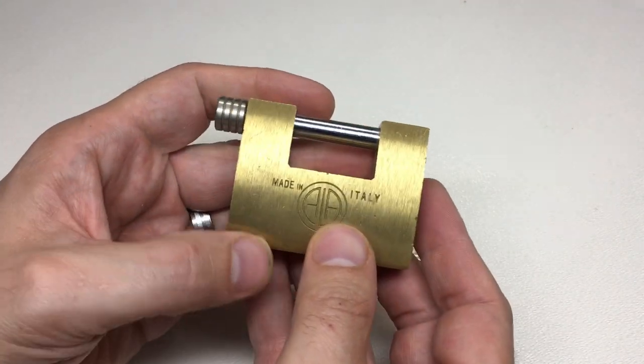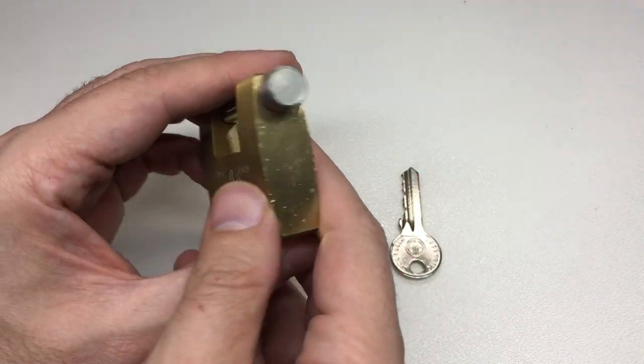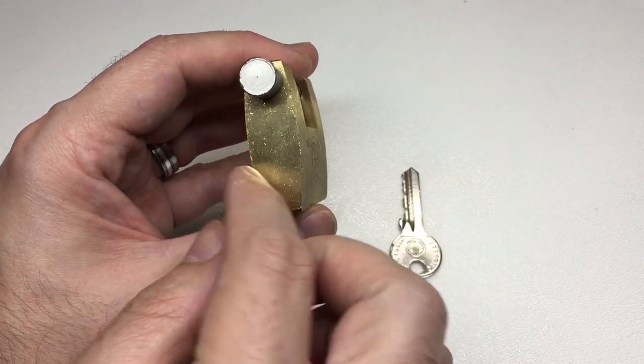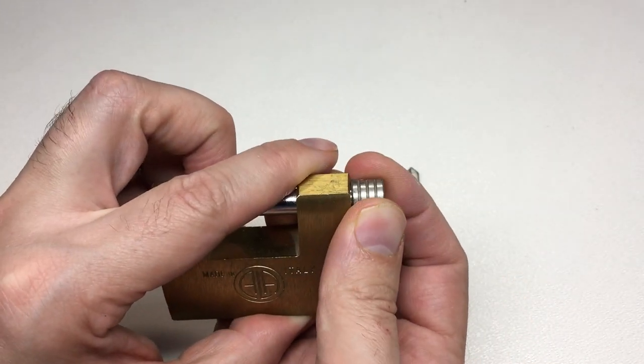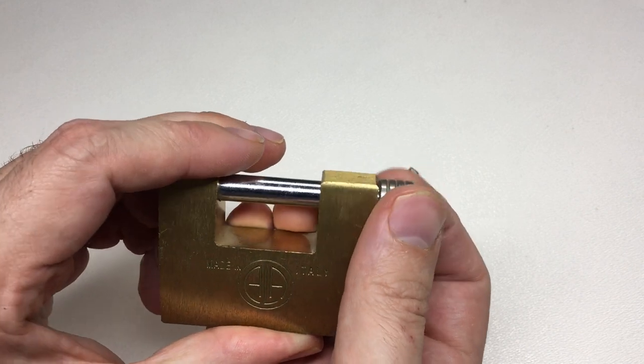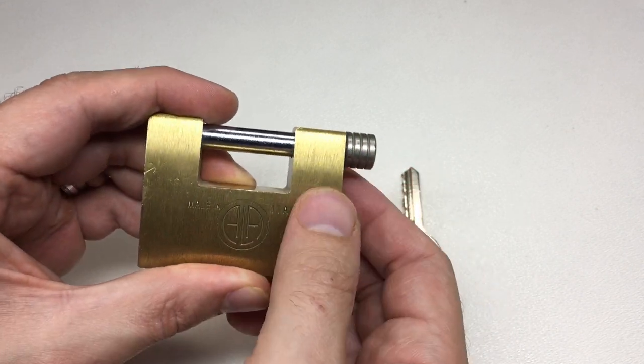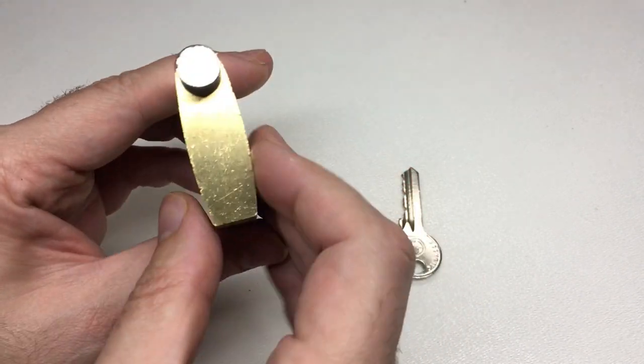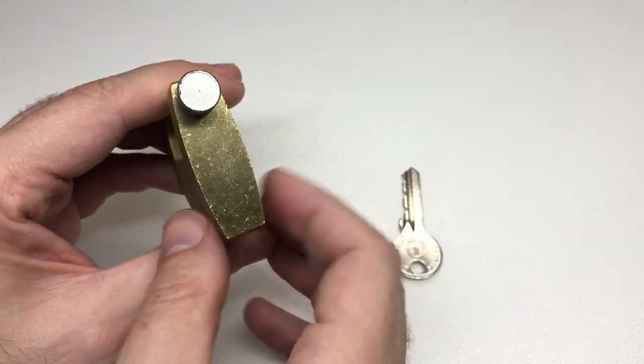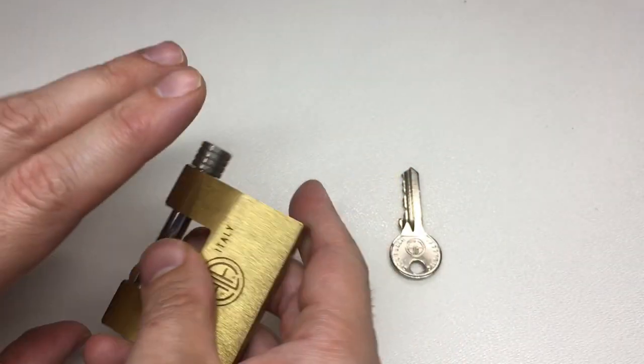I mean, look at this for example: a really nice little knob there for pulling out the shackle when it's unlocked, a nice lozenge shape to the side profile there. Really nice. So how are we going to pick this? Well, let's just check it works first.